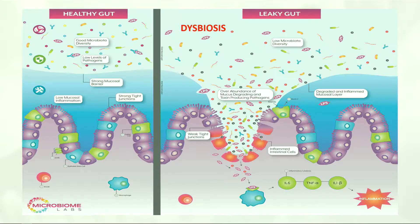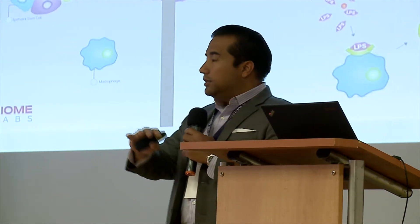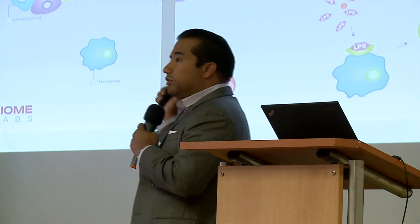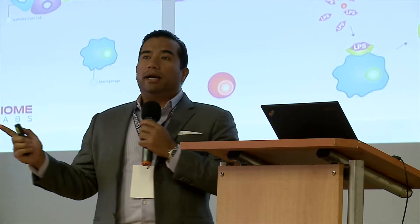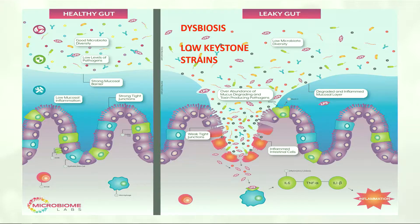What starts to happen in this process begins with dysbiosis — an imbalance of good and bad bacteria. When you look at a decade's worth of microbiome research, there is a fairly well-characterized dysbiosis present in most chronic illnesses. The first hallmark is low levels of keystone strains. Within the microbiota, they've identified strains that play a pivotal role in maintaining health and wellness and also maintaining the integrity of the rest of the population.